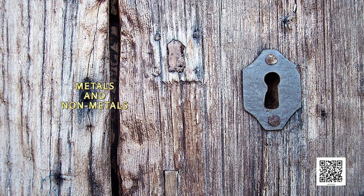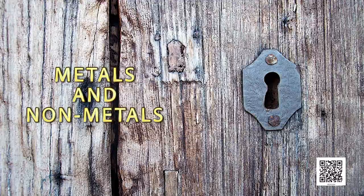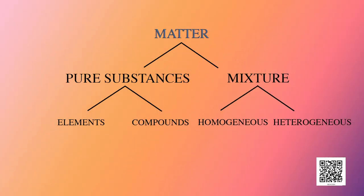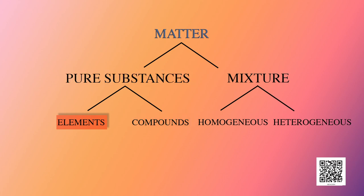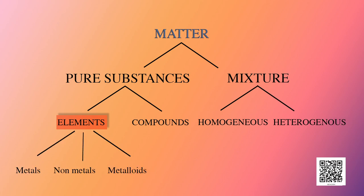Let us explore more about metals and non-metals in this lesson. In your previous class, you studied about matter and their classification. Based on their chemical nature, it can be sorted into pure substances and mixtures. Pure substances are further categorized into elements and compounds. An element is a substance made entirely from one type of atom. Elements can be viewed as metals, non-metals and metalloids.